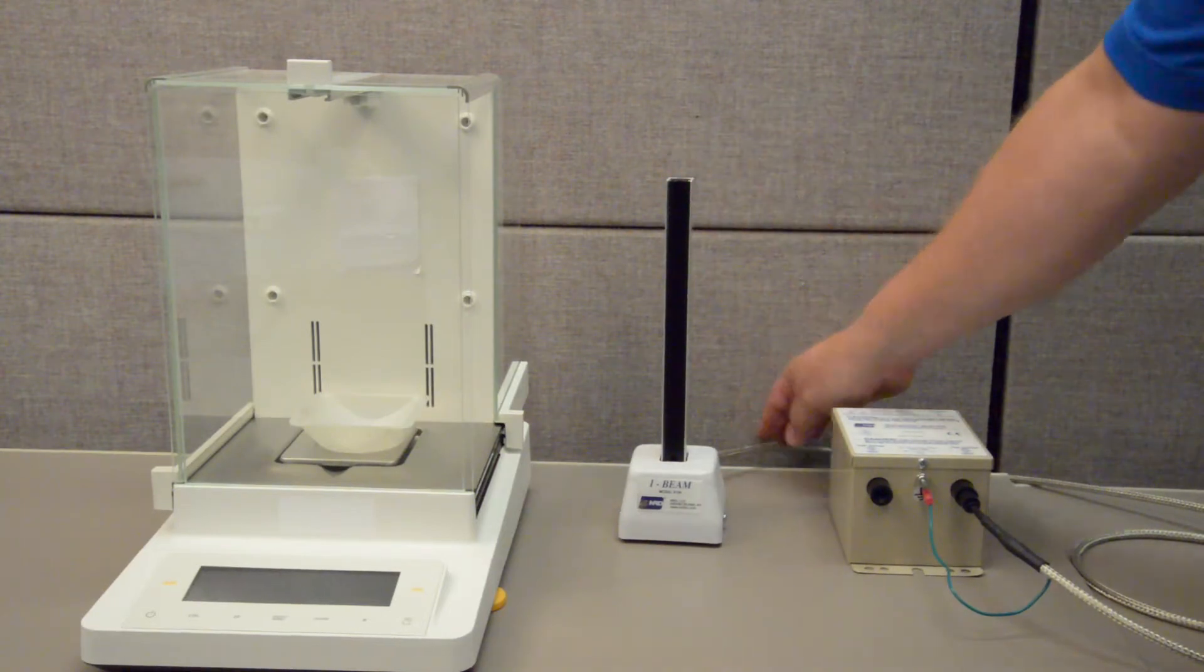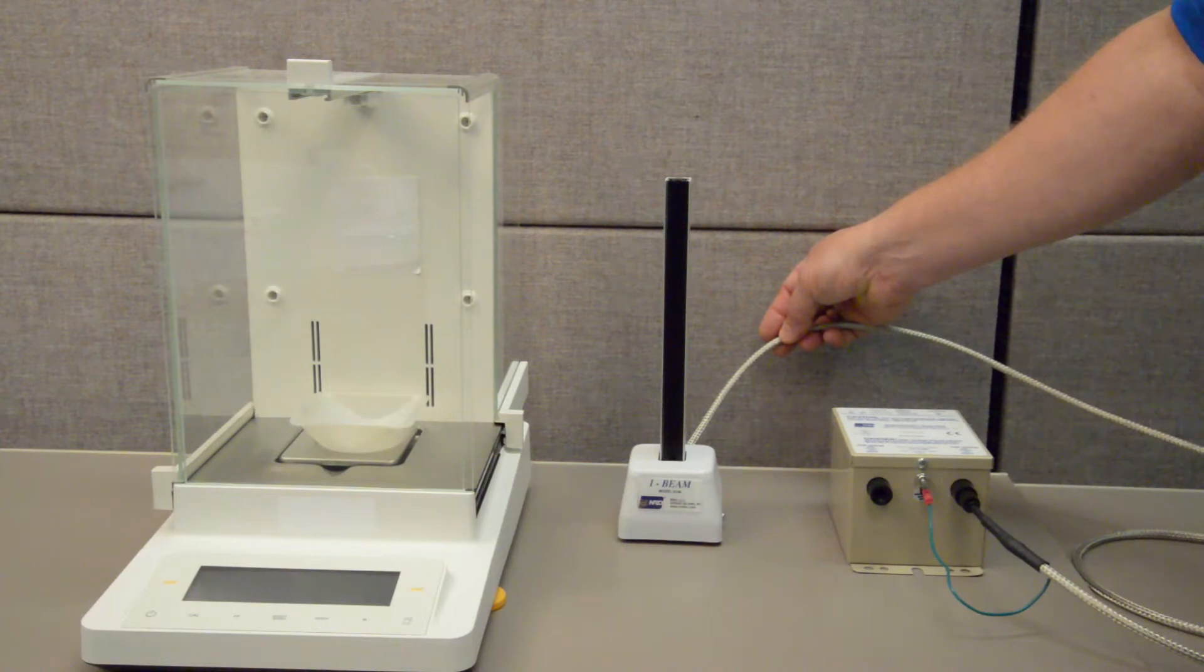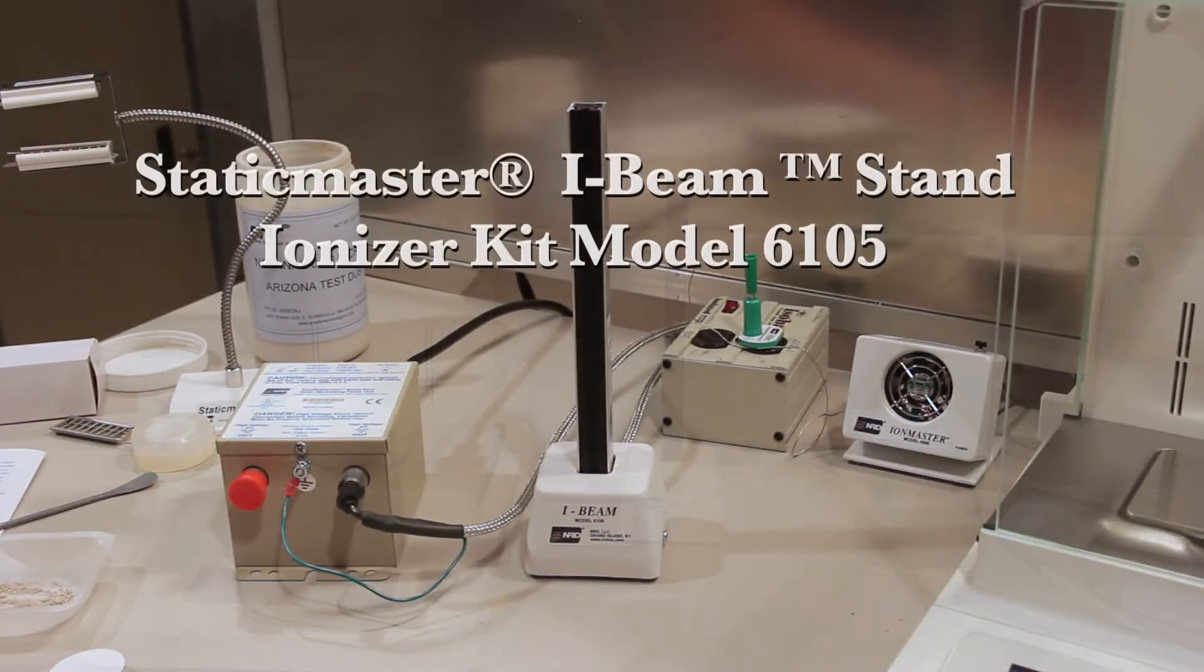It's also important to note that the I-beam shielded power cable prevents the emission of any electromagnetic noise and interference that could potentially interfere with the proper operation of the sensitive microelectronics in your scales and balances.